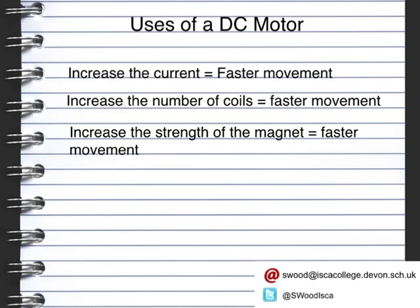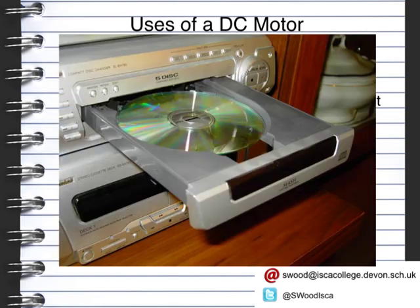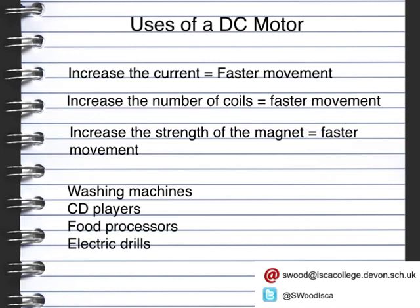There are lots of things that actually use a DC motor. Things like washing machines, CD players, food processors, and electric drills—anything that has a moving motor part will have a DC motor within them. However, one of the problems with using a DC motor is that it can waste energy to the surroundings as heat and sound. Anybody that's used an electric drill will be well aware of the wasted energy there.